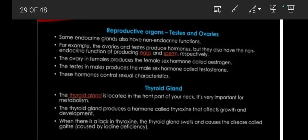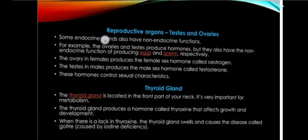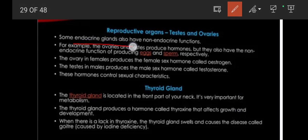Welcome to my YouTube channel Unipik. In today's video we will discuss reproductive organs — testes and ovaries. Some endocrine glands also have non-endocrine functions. For example, ovaries and testes produce hormones, but they also have non-endocrine functions: to produce eggs and sperms respectively.